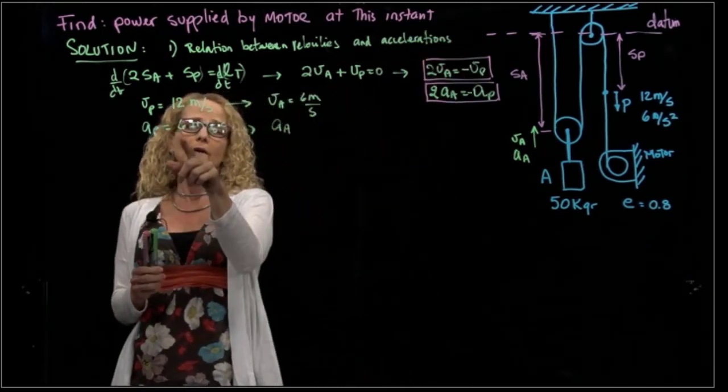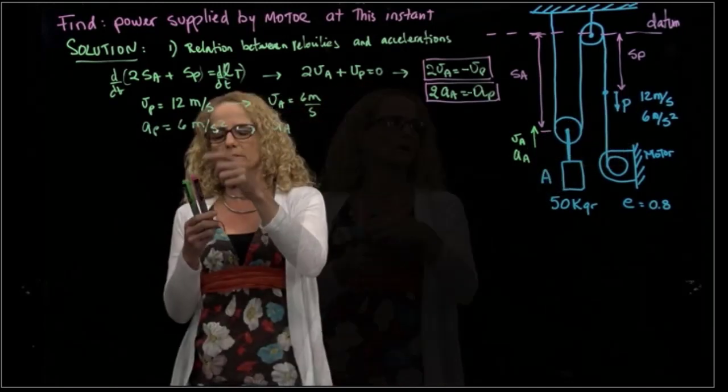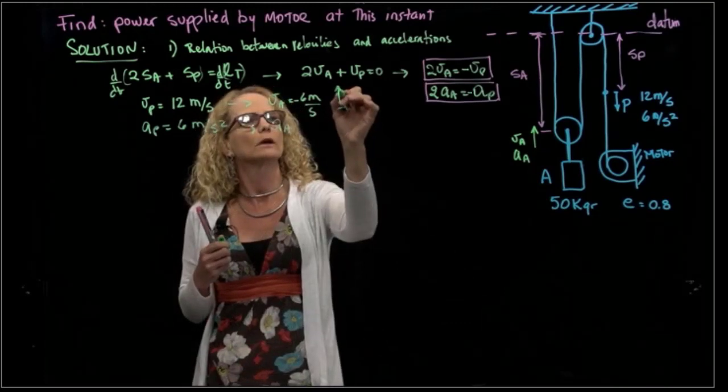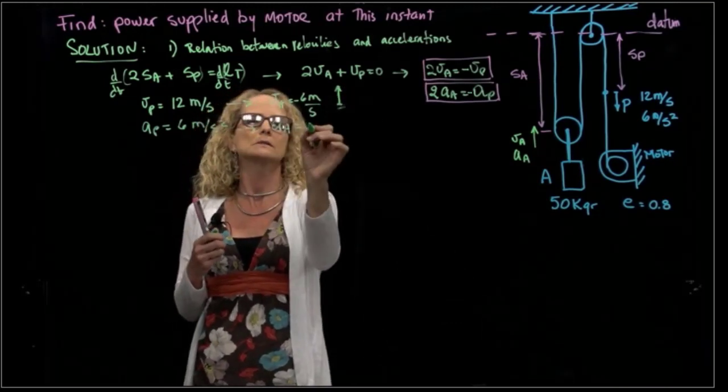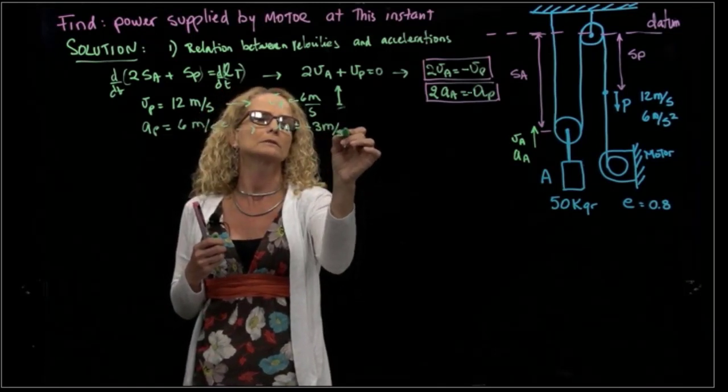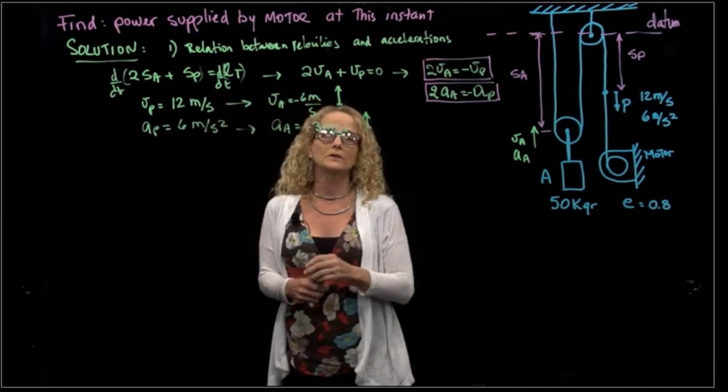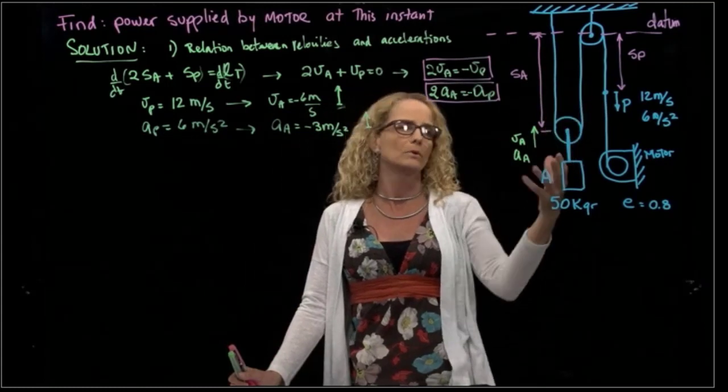So if I have an acceleration of P going downwards, let's make sure we take into consideration the velocity of A is going upwards. And the acceleration, if this is 6 for P, this will be negative 3 meters per second squared going upwards as well. So that was my first step. I always have to find the relation between the points in a pulley system.